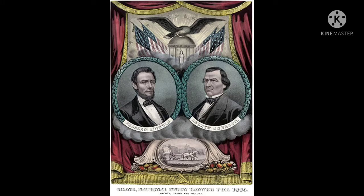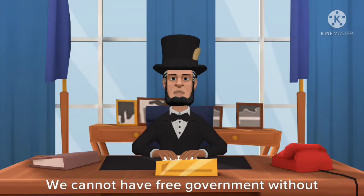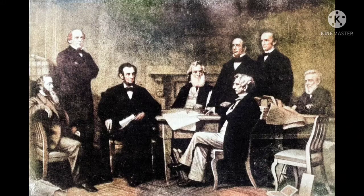In 1864, Lincoln's first term as President was coming to an end. There was supposed to be an election in November, but was it possible to hold an election during a civil war? Lincoln's advisors suggested putting it off until the war was over. He refused. 'We cannot have free government without elections,' he explained. So a campaign began, though all the people in the rebel states would not be voting. Lincoln's opponent was George McClellan, the general who wouldn't fight. In his speeches, McClellan hinted that he would be willing to compromise.